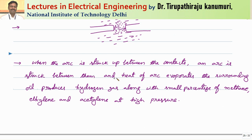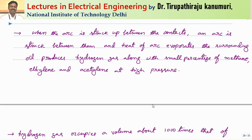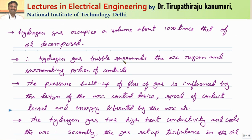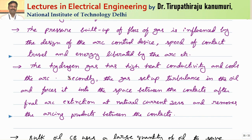When the arc is struck up between the contacts, the heat of the arc evaporates the surrounding oil, producing hydrogen gas along with a small percentage of methane, ethylene and acetylene at high pressure. This hydrogen gas occupies a volume of about 1000 times that of the oil decomposed. The hydrogen gas bubble surrounds the arc region and the contacts. The pressure buildup is influenced by the design of the arc control device, the speed of contact travel, and the energy liberated by the arc.